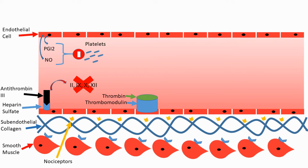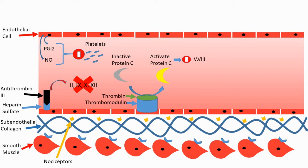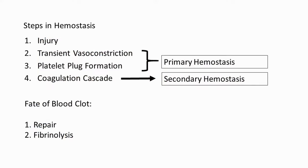Thrombomodulin-bound thrombin takes protein C, which is present in the blood in its inactive form, and converts it into its active form. Once protein C is activated, it goes on to inhibit factors 5 and 8, which are also involved in the coagulation cascade. This is how activated protein C is responsible for the natural anticoagulant state of the blood.